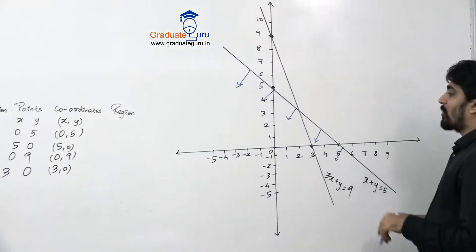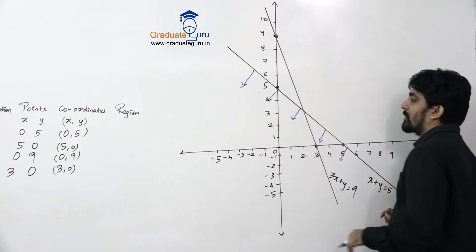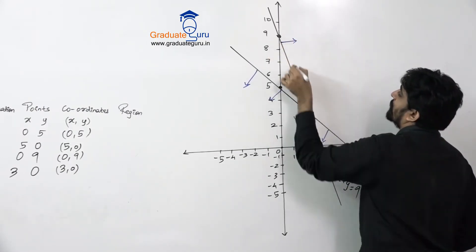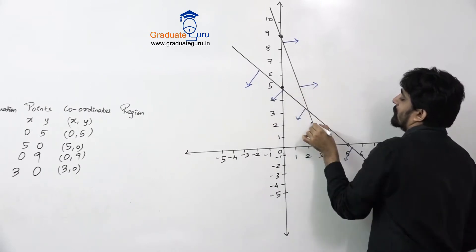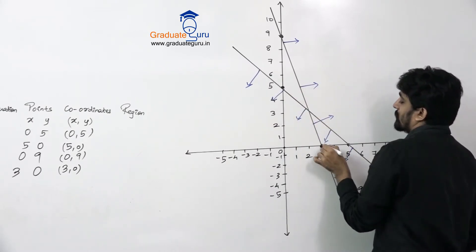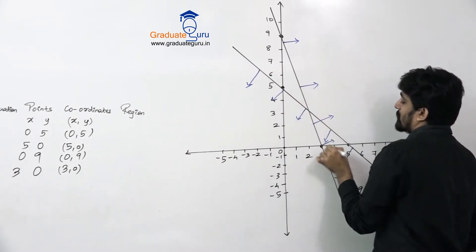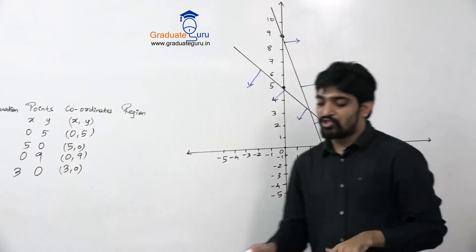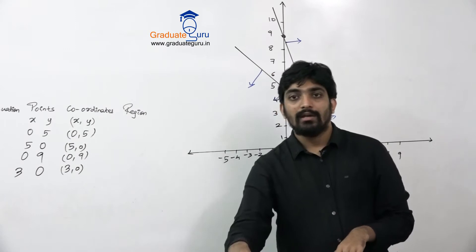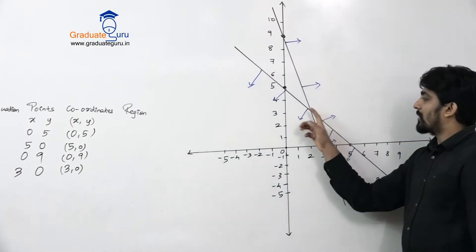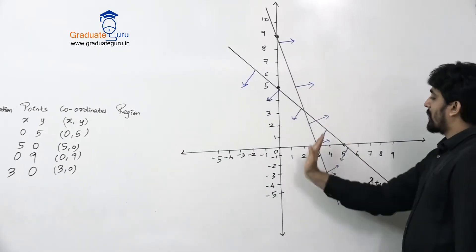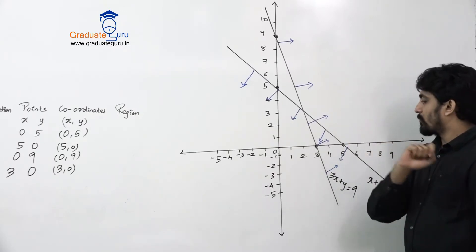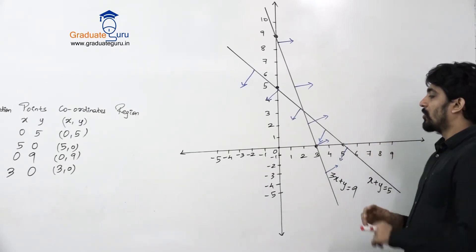For the second condition: substituting (0,0) gives 0, and 0 is not greater than or equal to 9 — so this condition is not satisfied. Therefore this line goes away from the origin, meaning the region is in the upward direction.